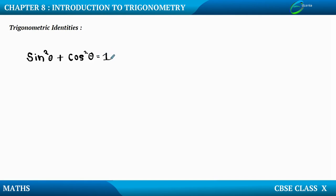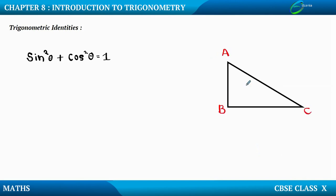Now let us see how this identity exactly comes into existence. For that I need a right angle triangle. So let us assume this is a right angle triangle. Let me name the vertices — say this right angle triangle is ABC. It has three sides: AB, BC, and AC. As we already know, angle B over here is 90 degrees.